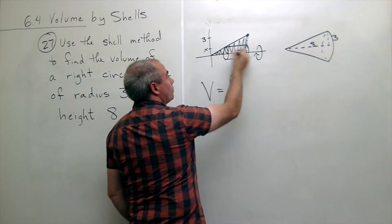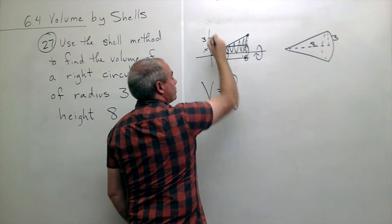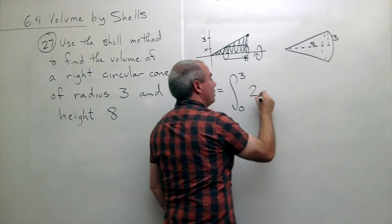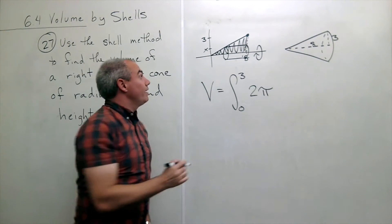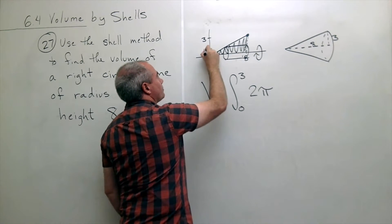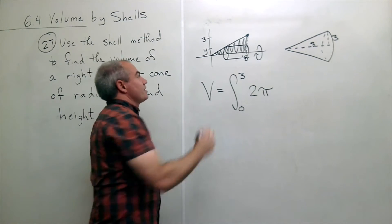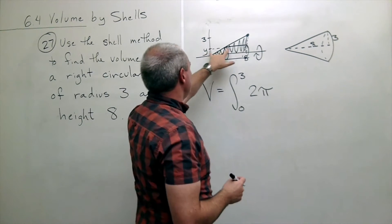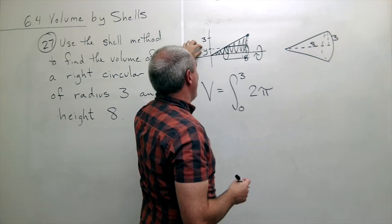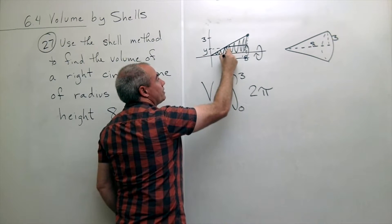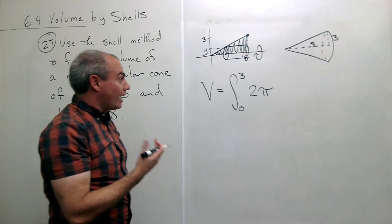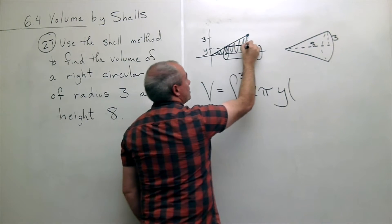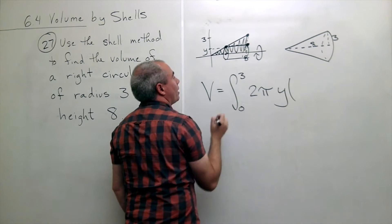I start at y equals zero and stop chopping at y equals three, so I'm integrating from zero to three. Then what goes inside is two pi r — the radius for this typical y value is simply y. Then we need the height of that typical cylinder, which is the top function minus the bottom function. The top function in this case is x equals eight.